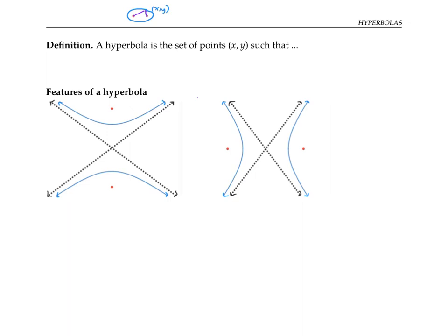A hyperbola is a set of points (x, y) such that the difference of the distances between (x, y) and each of two fixed points called the foci is a constant.